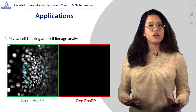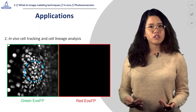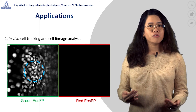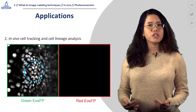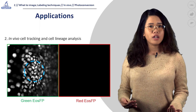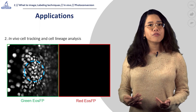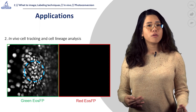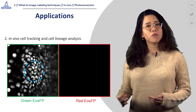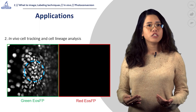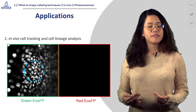Using a confocal microscope, we selected and illuminated a region of interest containing cells that we wished to photoconvert using a 405nm laser. The photoconverted red state EOS is stable and irreversible, which facilitates cell lineage analysis.